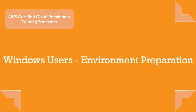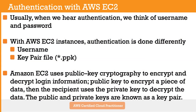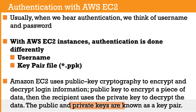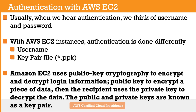In this section, we are going to prepare your Windows PC for the rest of the course. Let's talk about authentication. When we hear authentication, we think of username and password — for example, logging into your email account with your email address and password. With AWS EC2 instances, authentication is done differently. You use a username, but instead of a password, you use a file called the key pair file. If you use PuTTY, you'll need that file in PPK format.